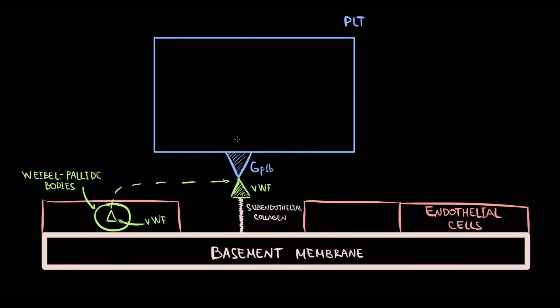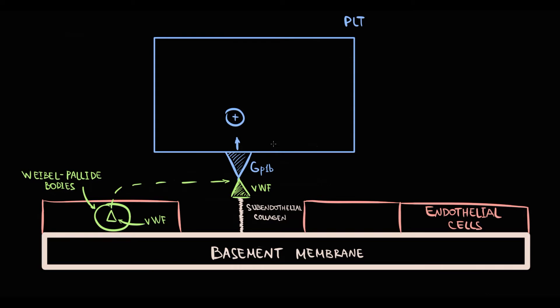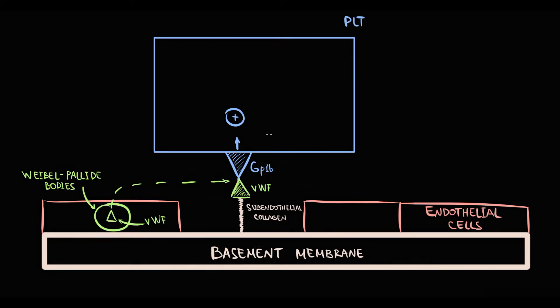After adhesion, platelets become activated. In response to this, they undergo shape change that results in their degranulation. With degranulation, platelets release the content inside them, including the dense granules that contain ADP.